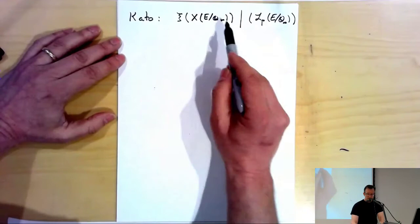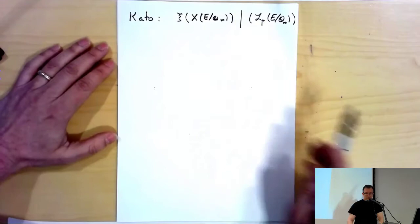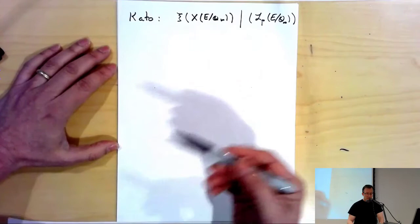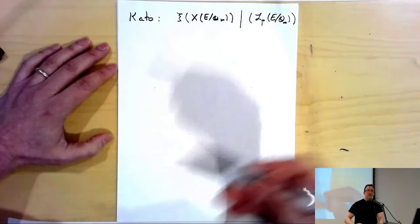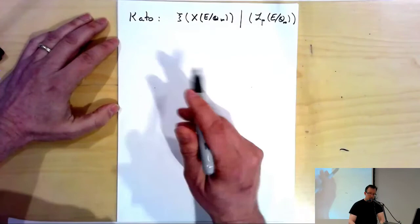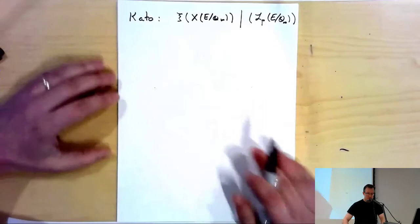But we would like to promote this divisibility to an equality. In the classical Iwasawa main conjecture, Iwasawa had shown that a divisibility combined with the analytic class number formula would yield an equality. But we don't have that analytic class number formula in this situation, so one wants to either establish a divisibility in the other direction or some other criterion for this to be an equality.